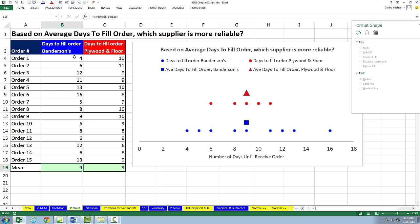We have two companies, Bandersons and Plywood and Floor. Our company makes boomerangs and we order custom aircraft birch plywood from each one of these companies. Here's the last 20 orders. This is a column of number of days it took for Bandersons to get the shipment to us. Here's a column, number of days for each one of the orders that Plywood and Floor took to get the custom order to us.